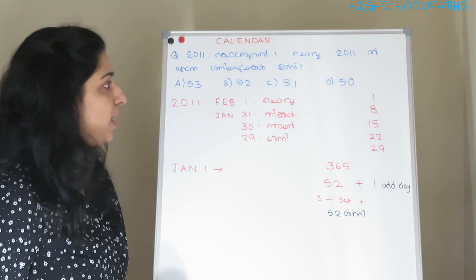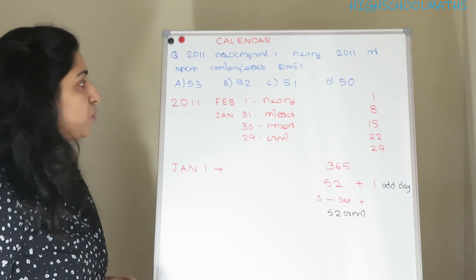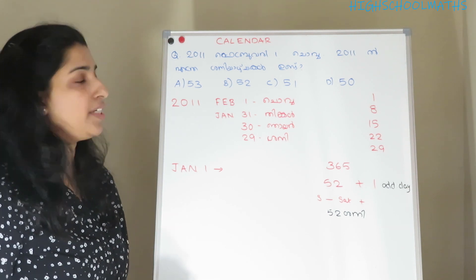On February 2011, how many Sundays are in February 2011? Option A: 53, Option B: 52, Option C: 51, Option D: 50.